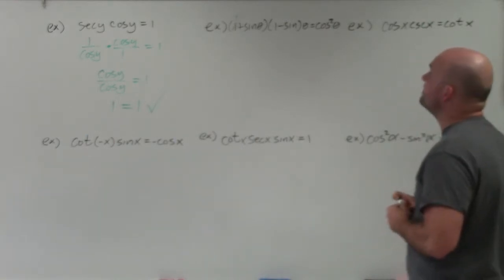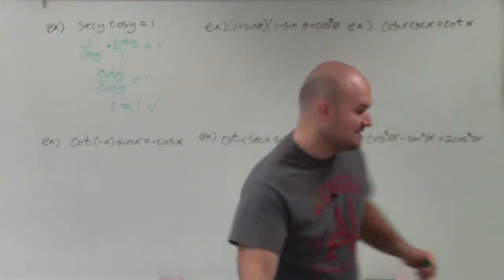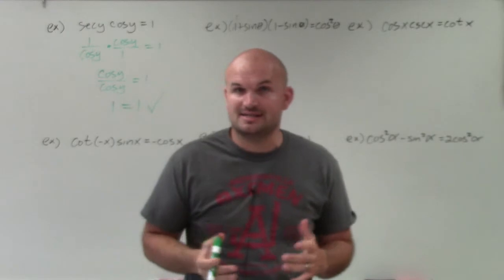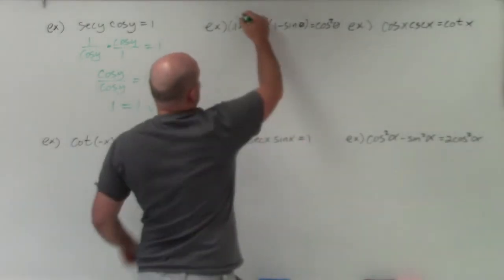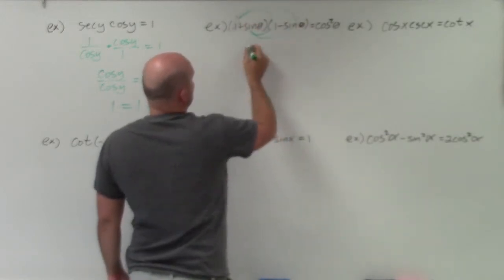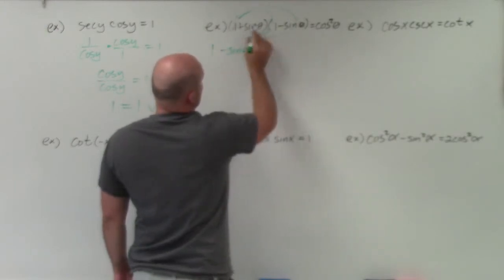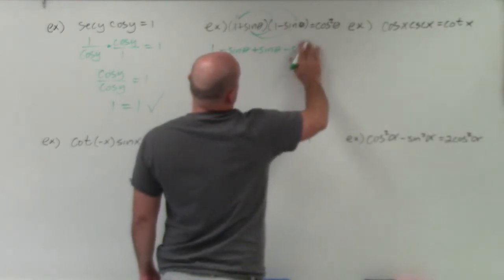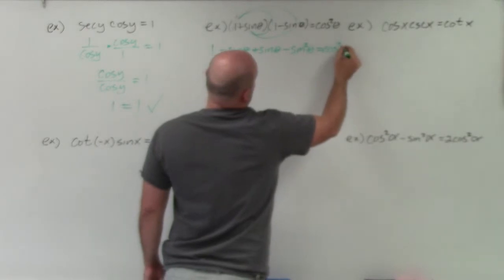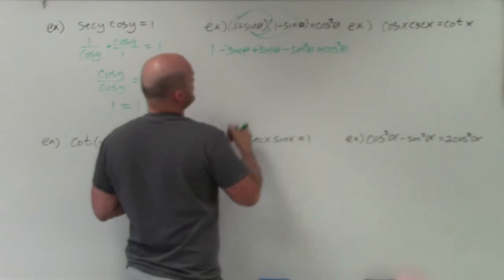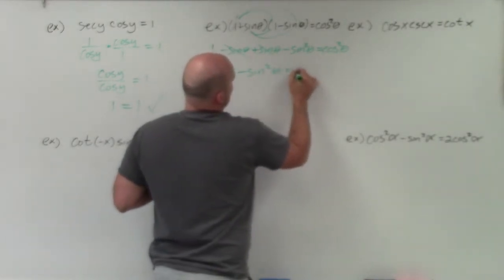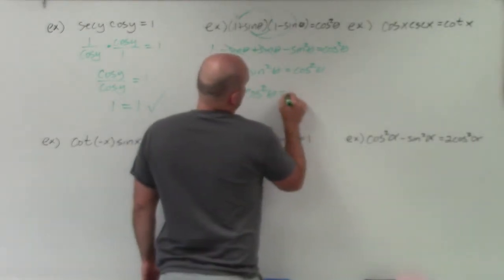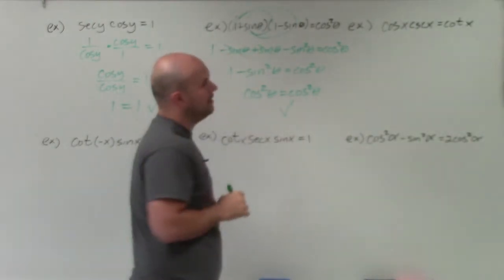In the next example, I have (1 + sin θ)(1 − sin θ) = cos²θ. Whenever you have an operation for an identity, the best thing to do is apply that operation. We have multiplication here, so I'll use the distributive property or FOIL. 1 times 1 is 1; 1 times negative sine of theta is negative sine theta; sine theta times 1 is positive sine theta; and sine theta times negative sine theta is negative sine squared theta. So I'm left with 1 minus sine squared of theta equals cosine squared of theta. By our Pythagorean identity, 1 minus sine squared theta equals cosine squared theta — verified.